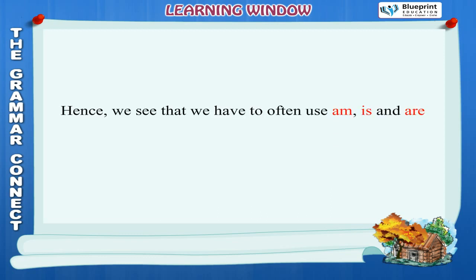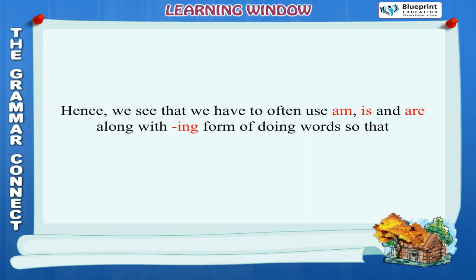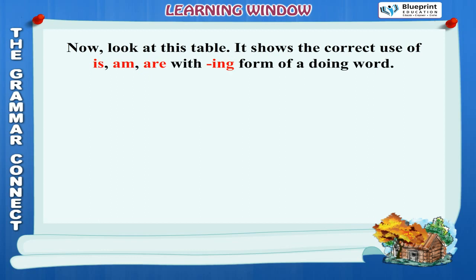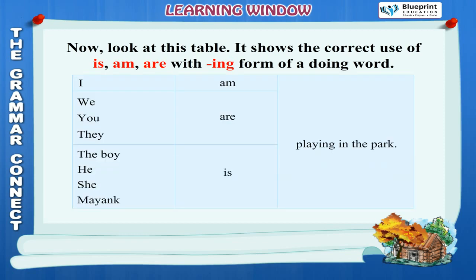We have to often use am, is and are along with the ING form of doing words so that sentences make complete sense. I am playing in the park. We are playing in the park. You are playing in the park. They are playing in the park. The boy is playing in the park. He is playing in the park. She is playing in the park. Myank is playing in the park.